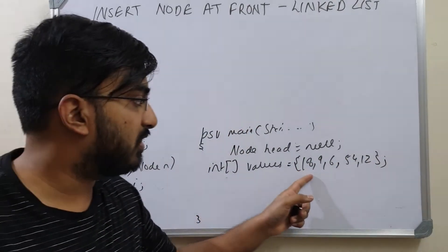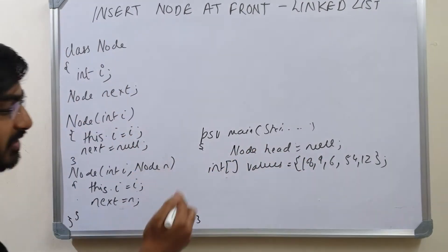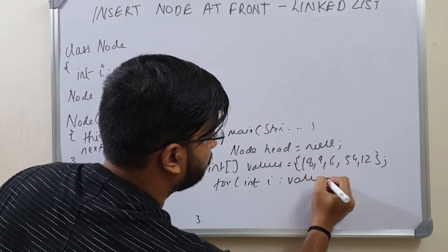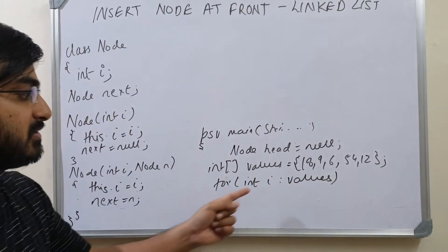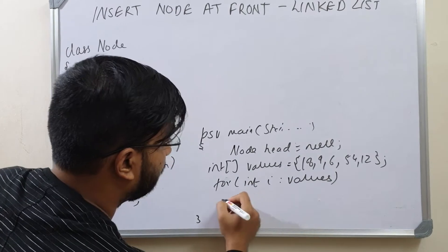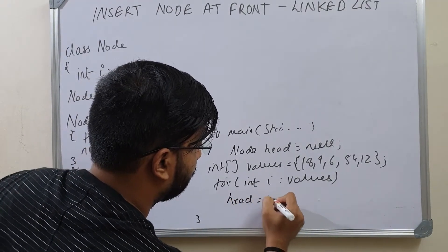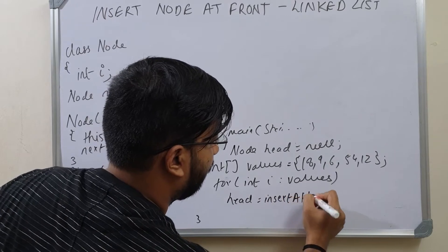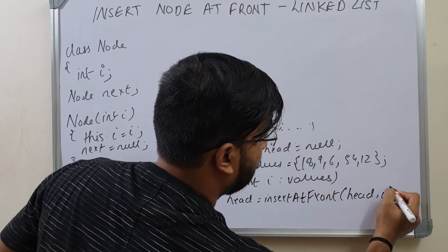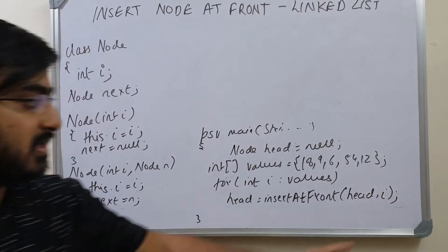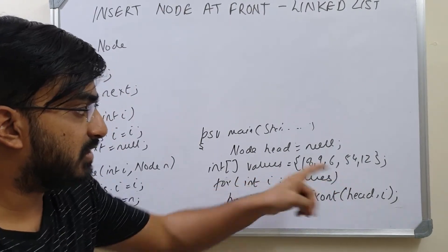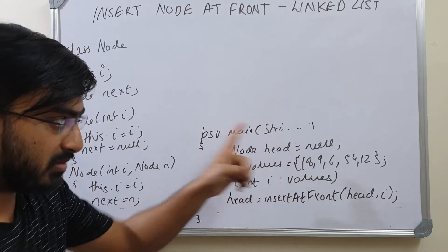I will insert these values of this array one by one into the head at the front, using a for-each loop to iterate through each value referencing with i. So head equals insertAtFront — this is the name of the method — and I will pass the head and the value to be inserted, which is i. After this for loop, all these values will be inserted into the linked list at the front.